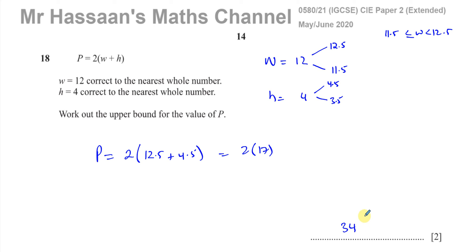One of the mistakes that people make is that they do the calculation first. They say two times 12 plus four, and that will give you two times 16, which is going to be 32. And then they put 32.5 or 31.5, and that's wrong. You don't do the calculation first, you do the upper and lower bounds of the numbers that have been rounded first, and then you put them in the calculation. So that's a very common error in this topic.